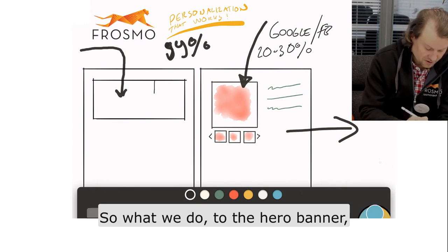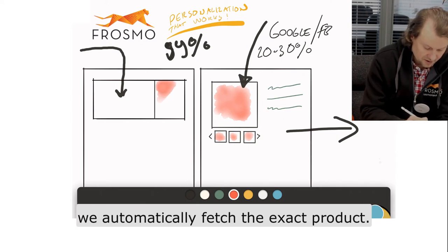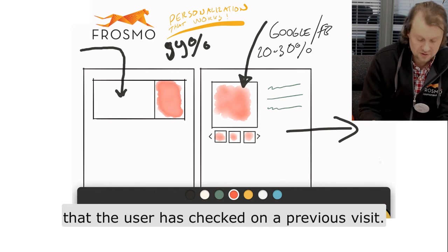What we do is in the hero banner, we automatically fetch the exact product the user checked on a previous visit.